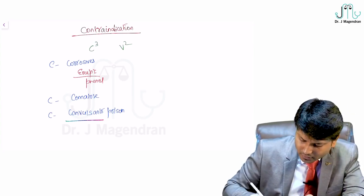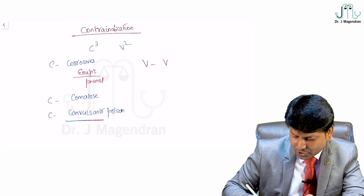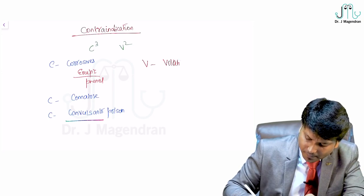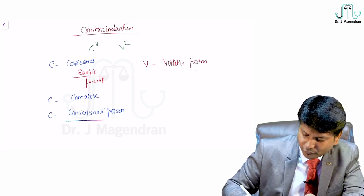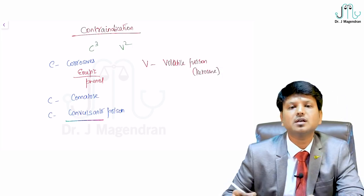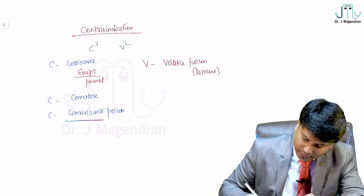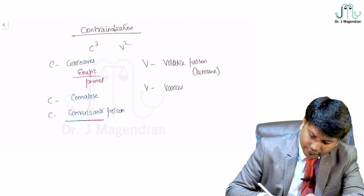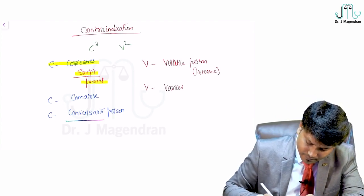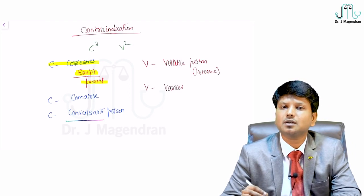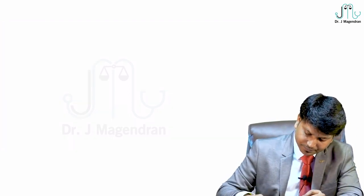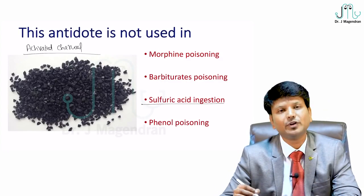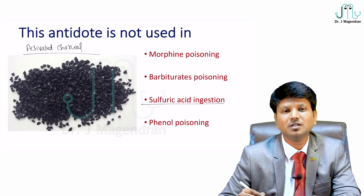The letter V in C3V2 refers to volatile poisons — for example, kerosene — because it can cause aspiration. Various bleeding conditions are also a contraindication. Kerosene is an absolute contraindication. The answer for the antidote question is sulfuric acid poisoning, wherein activated charcoal is not at all helpful.